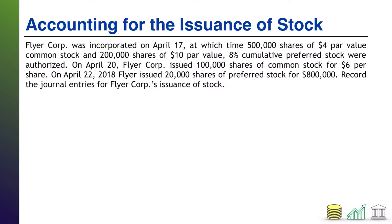All right, welcome back. There are really only two dates we have to worry about from an accounting standpoint: April 20th when the common stock is issued, and April 22nd when the preferred stock is issued. It does not matter when the company was incorporated and did the original authorizations of the stock. That is not economic activity — that is just the approval process that later leads to the issuance, which is economic activity.